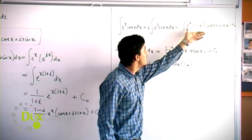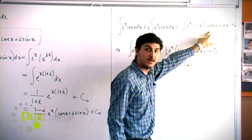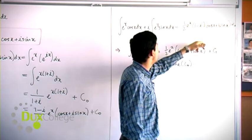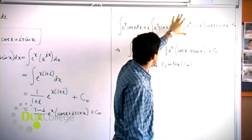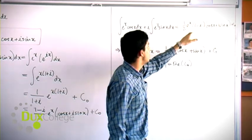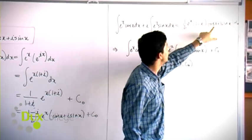On the right-hand side, the real part becomes the real part here multiplied by the real part there, plus the imaginary part here multiplied by the imaginary part there. The real part times the real part gives us cos x.